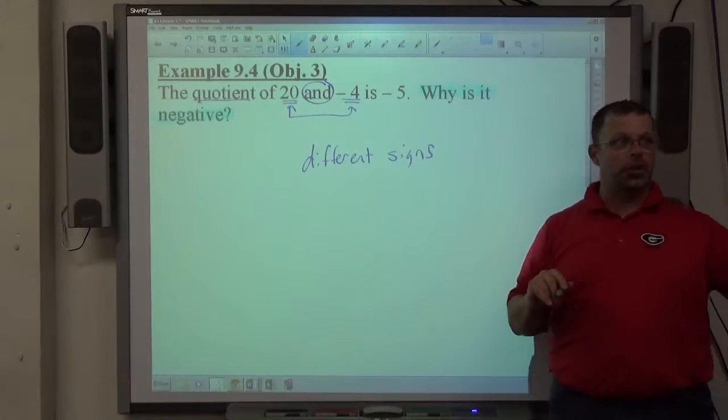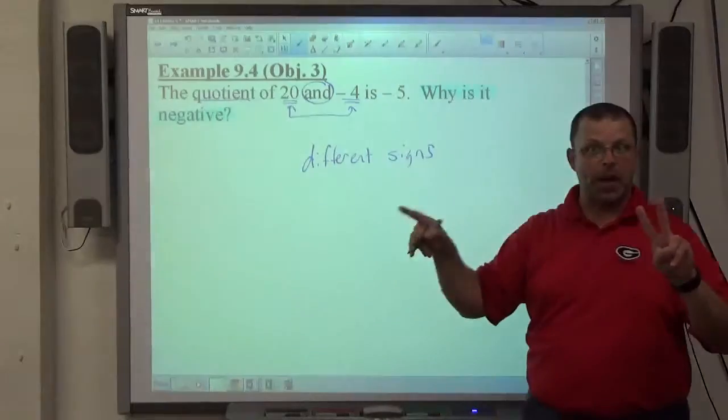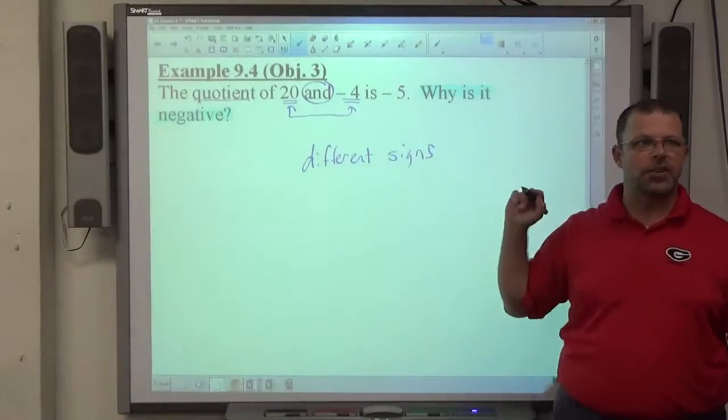If you're dealing with two numbers at a time, and the question asks why is the answer negative, multiplying or dividing two numbers at a time, this is always the reason why: the different signs.